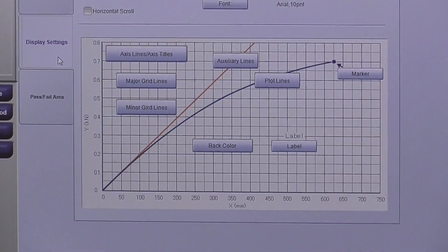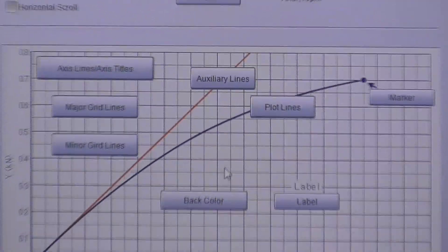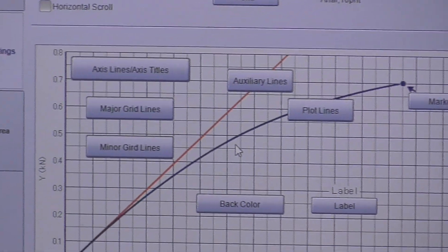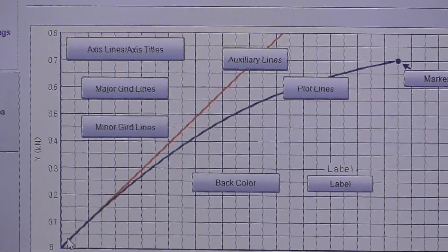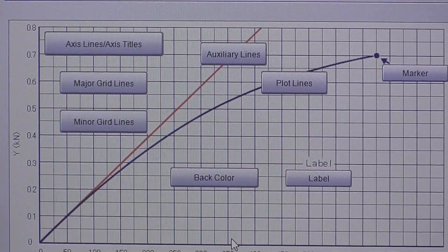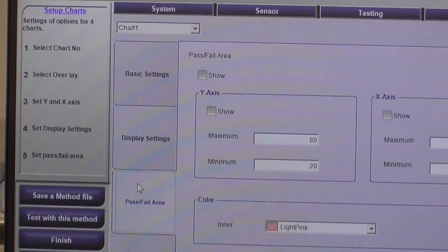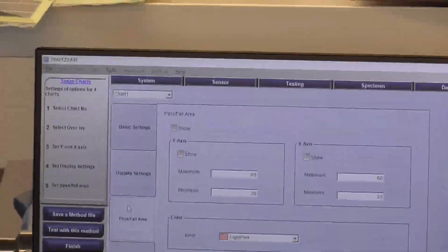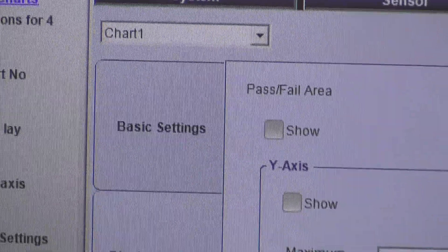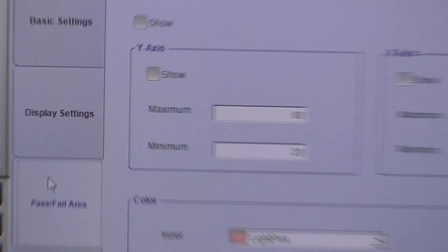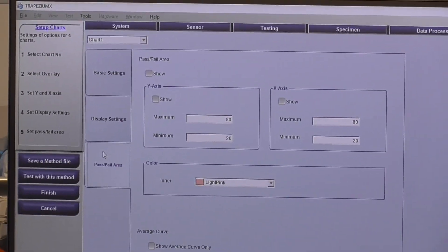Going down to the setting tab, this is kind of more mundane, changing the color of your plot lines, the spaces of the markations between the x and y axis. Lastly, you can set up a pass-fail area. This is more common in QC where essentially it creates a color on your graph, so it's a quick check whether your sample has passed or failed a predefined criteria.